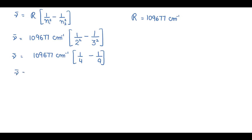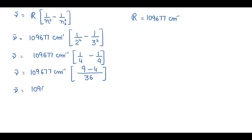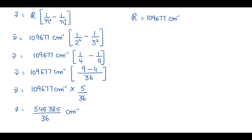Taking the LCM of 4 and 9, which is 36: (1/4 − 1/9) = (9 − 4)/36 = 5/36. So nu bar = 109,677 cm⁻¹ × 5/36. Multiplying: 109,677 × 5 = 548,385. Dividing by 36 gives nu bar = 15,232.91 cm⁻¹.